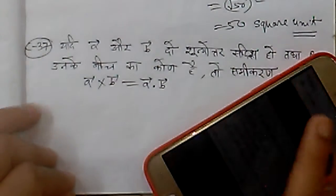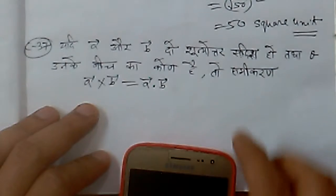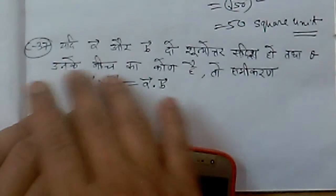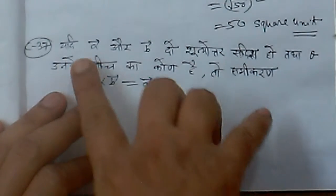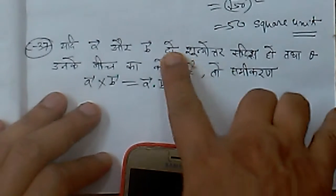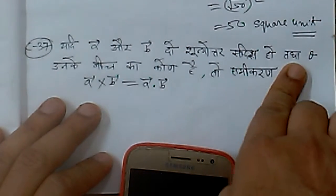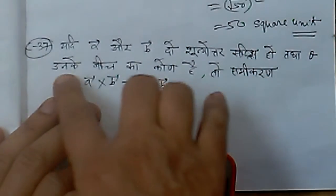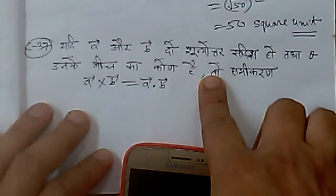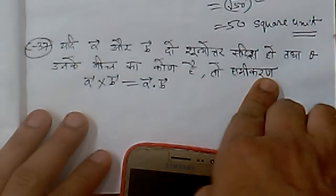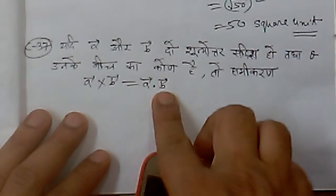Bismillahirrahmanirrahim. On the demand of Himansu Chaurasya from Ilavad, this is a vector analysis problem. If A and B are two non-zero vectors and the angle between them is theta, then the equation A cross B is equal to A dot B.